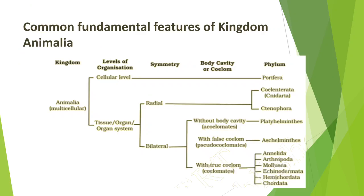The rest of the phylums are included under bilateral symmetry. Within bilaterally symmetrical animals, we can divide them into acoelomates, pseudocoelomates, and coelomates. Platyhelminthes are acoelomates; Aschelminthes are pseudocoelomates; and the rest of the phylums — Annelida, Arthropoda, Mollusca, Echinodermata, Hemichordata, and Chordata — are coelomates, meaning they have a well-defined organ system with a coelom present in their body.